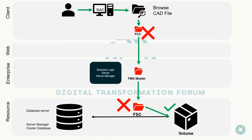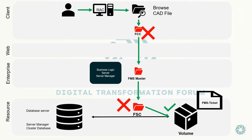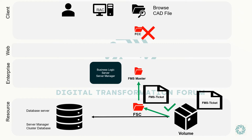In the end, the request further goes to the volume server where it will find the data. Once the request has found the data in the volume server, it generates an FMS ticket. This ticket acts as a token to cross-check if the data is up to date or whether it has been modified by someone else. The system then creates a copy of the FMS ticket in FSC and FCC respectively.